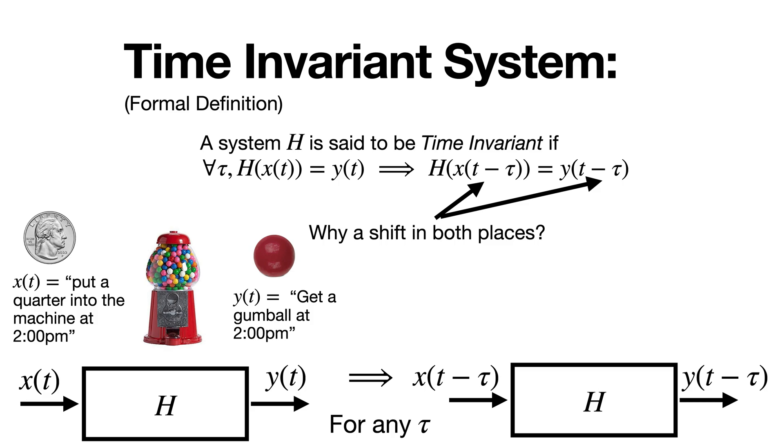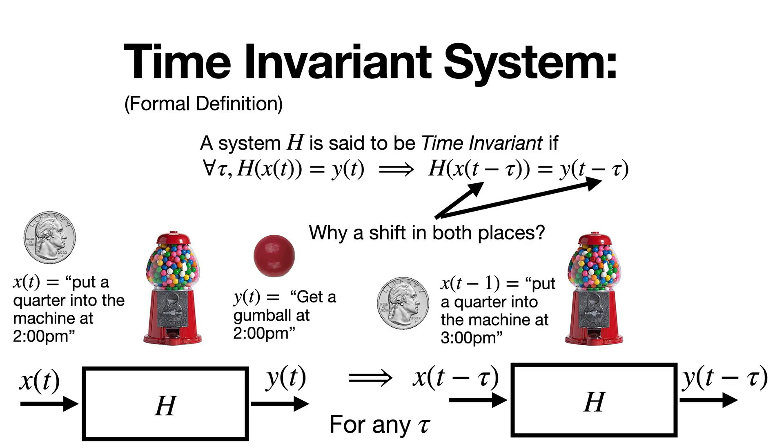Now consider x of t minus 1. This is not going to show any action until 3pm because it's shifting the signal that had action at 2pm one unit to the right or later. So it actually needs to be 3pm until x of t minus 1 shows me putting in the quarter. And likewise, if I put the quarter in at 3pm, I would expect to see the gumball at this time as well. So in other words, if I put a quarter in at some time, 2pm, and get a gumball at that time, then if I put a quarter in at a different time, I will get the gumball out at that same time that I put the quarter in. That's why they both need to shift.